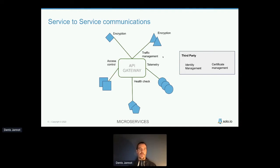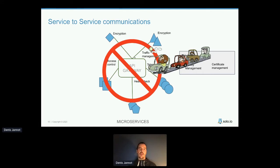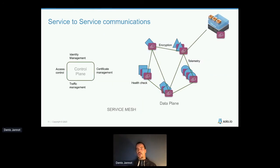Using an API gateway for service-to-service communication doesn't solve the encryption problem — you still need to handle that at the application level. And it's not scalable: when you have more and more services, the API gateway becomes a bottleneck.